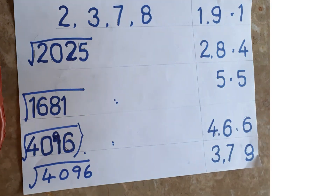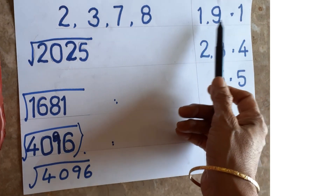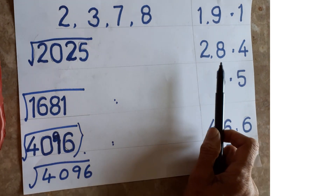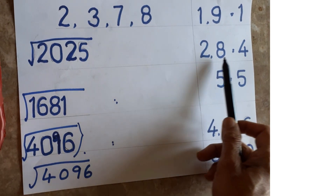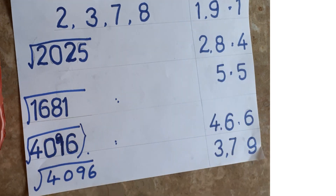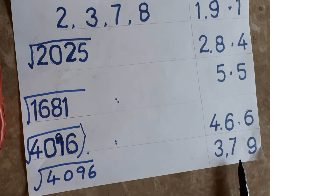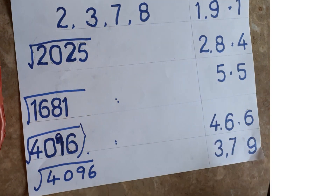Whatever power you raise — 9, 99, 999, 9000 — you will always get units digit 1. Similarly for 2, 22, 88, 888 — you always get units digit 4. For 4 and 6: four fours are 16, six sixes are 36. For 3 and 7: three threes are 9, seven sevens are 49. First understand this concept, then you can do it easily.